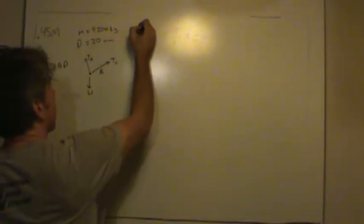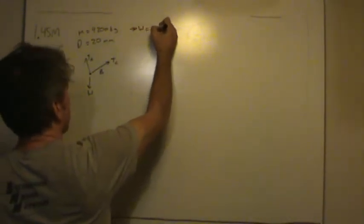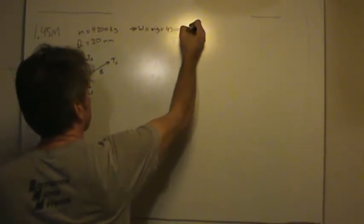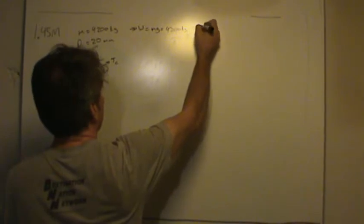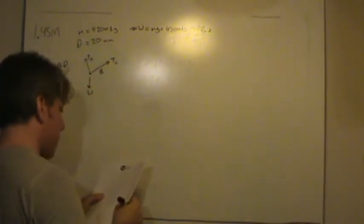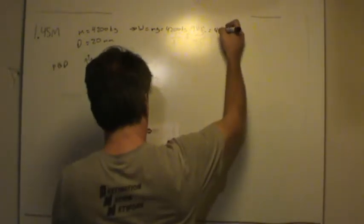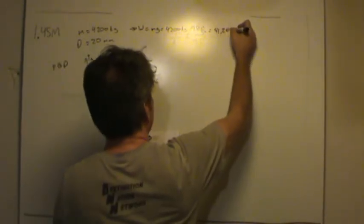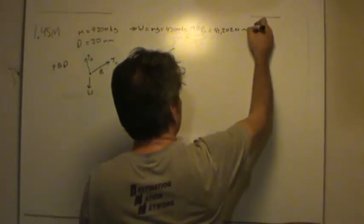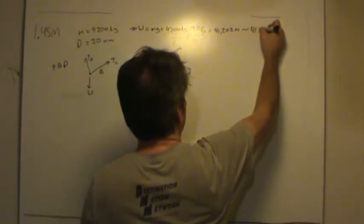The first thing I did was I calculated the weight. In fact, I said the weight is mg. That's 4200 kilograms multiplied by 9.81 meters per second squared. So a kilogram meter per second squared is a newton. And this comes out to 41,202 newtons, which is about 41.2 kilonewtons.